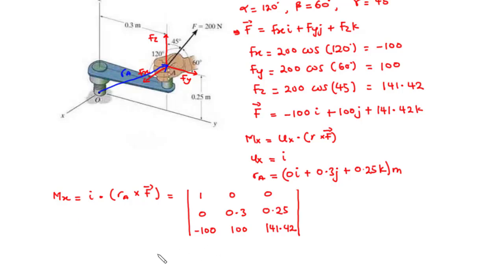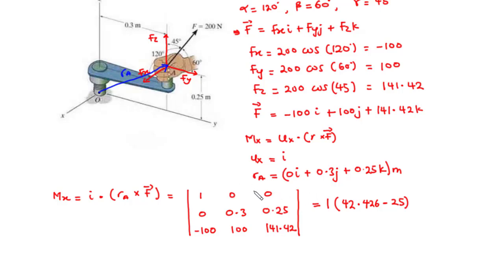Let's find Mx. We pick 1, cancel out its row and column, and we have 1 times the bracket: 141.42 times 0.3 equals 42.426, minus 100 times 0.25 equals 25. The elements with 0 give zero contributions. So we have 1 times (42.426 minus 25), which gives 17.426.